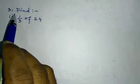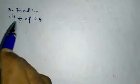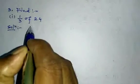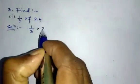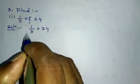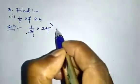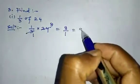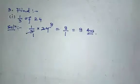Question number 3, find: number 1 — one-third of 24. Solution: 1/3 into 24. Cancel 3 — 3 eights are 24 — so 8 ones are 8, giving 8/1 equal to 8. The answer is 8.